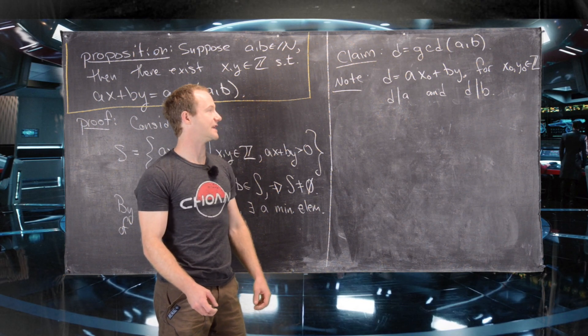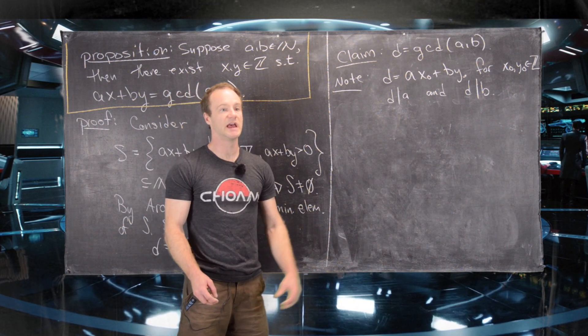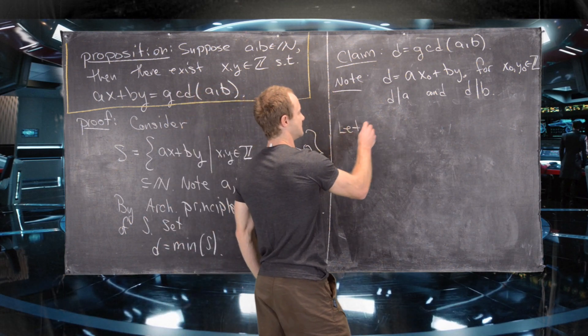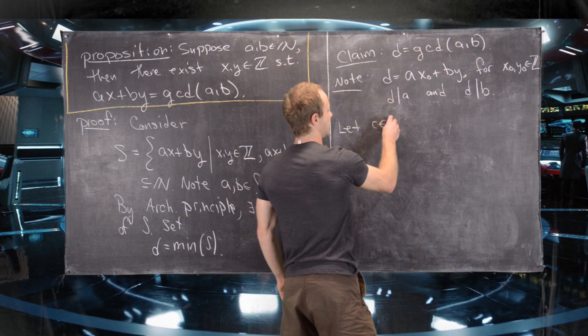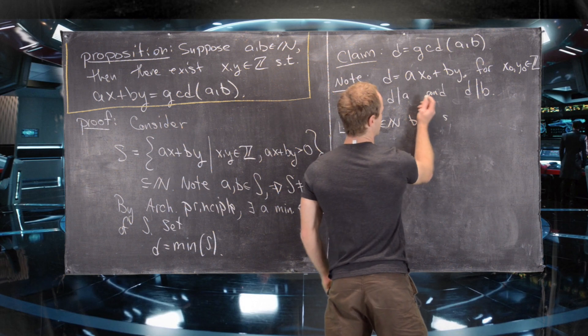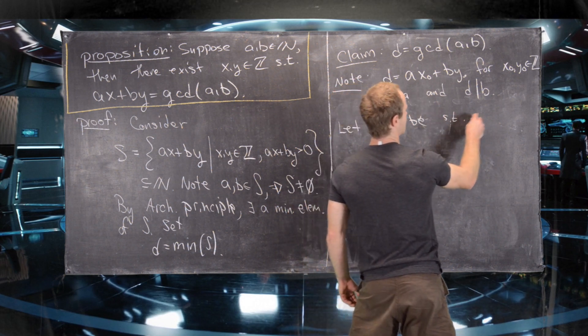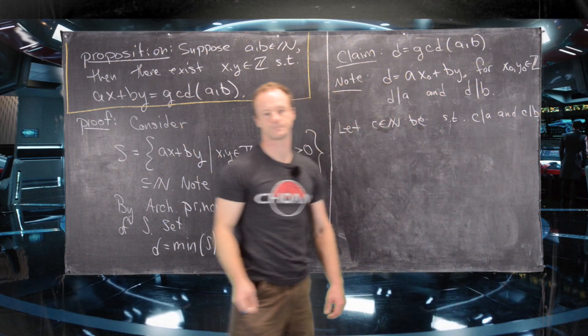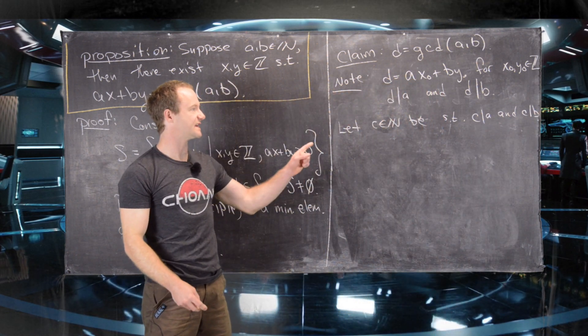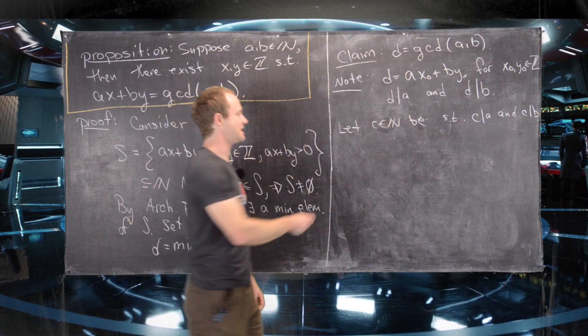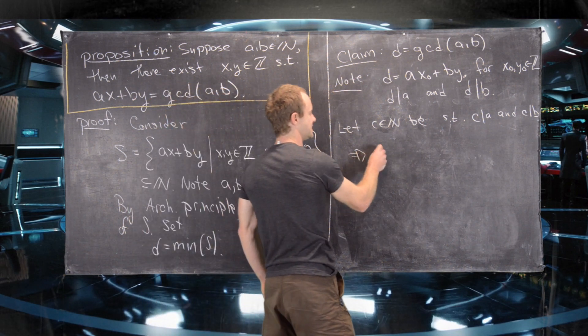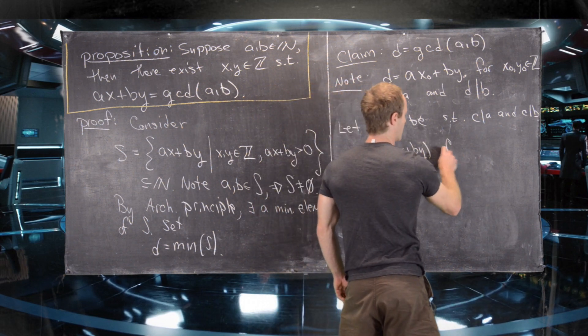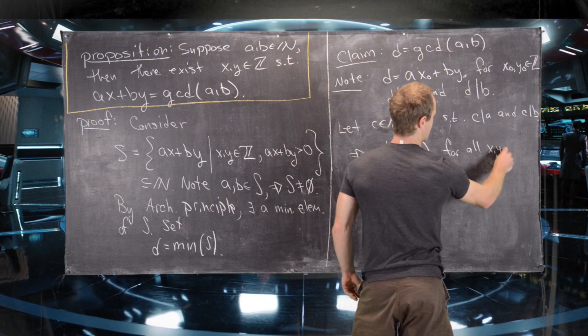So how we'll do that is we'll take another common divisor of A and B and show that that, in fact, divides D. So let's let C in the natural numbers be such that C divides A and C divides B. And so now since C divides A and C divides B,